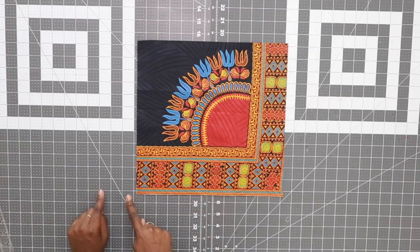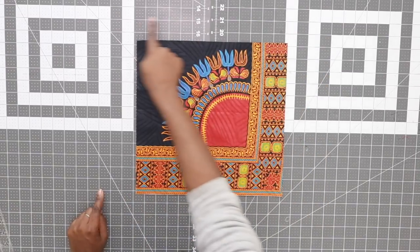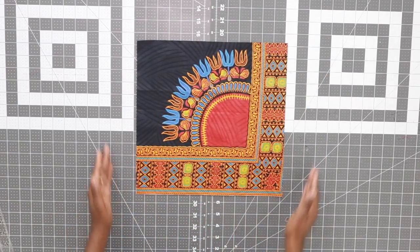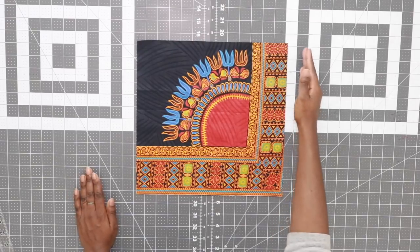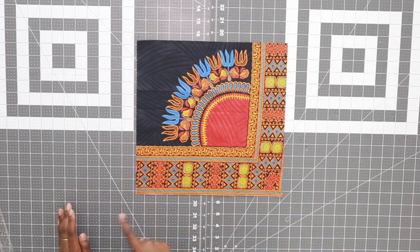For my pocket square, I went ahead and cut out a square that is 13 inches all the way around. So 13 inches, 13 inches, 13, 13.